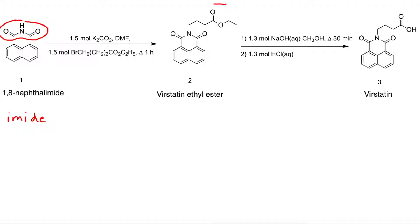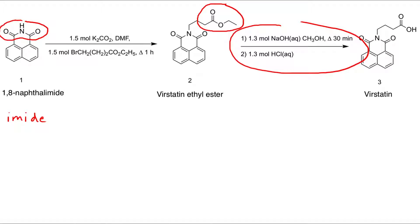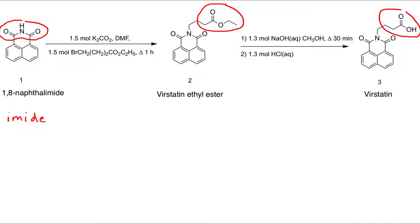Next, we convert the ester functional group by reacting our intermediate product with additional reagents to create a carboxylic acid. This will then form our target compound, Verstatin.